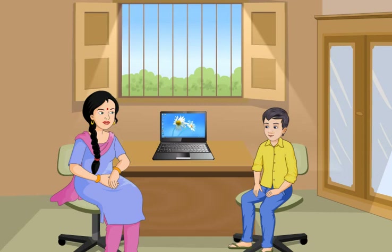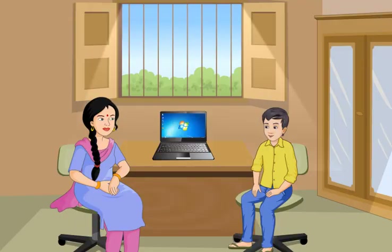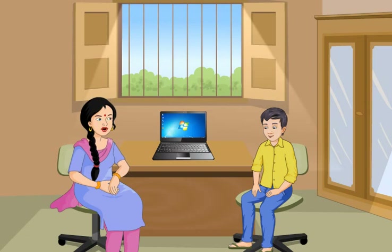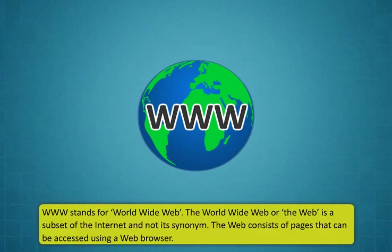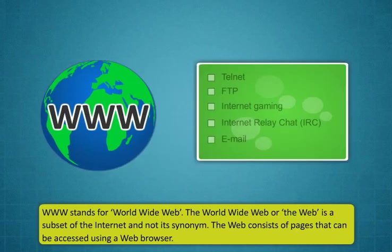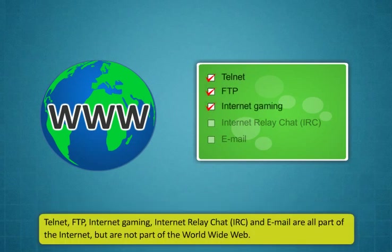Wasn't learning about the internet interesting? Now let's take part in this activity. Didi, do you know why we have to type www in front of a hyperlink when we search for something on the internet? www stands for World Wide Web. I have heard a lot about it. Can you tell me more about it? Sure, Rohan. World Wide Web — www stands for World Wide Web. The World Wide Web or the web is a subset of the internet and not its synonym. The web consists of pages that can be accessed using a web browser. Telnet, FTP, Internet Gaming, Internet Relay Chat or IRC and email are all part of the internet but are not part of the World Wide Web.